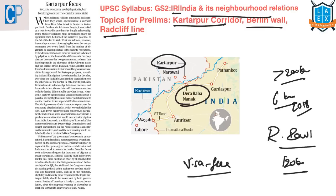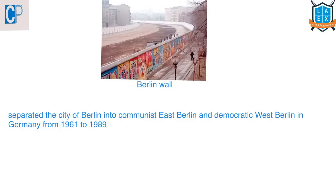We should also know about this Kartarpur Gurudwara. Why is it famous? Because this is the place where Guru Nanak, the founder of Sikhism, assembled a Sikh community and lived here for 18 years until his death in 1539. This shrine is visible from the Indian side, as the Pakistani authorities generally trim the grass so that Indian Sikhs used to gather in large numbers for the Darshan from the Indian side.